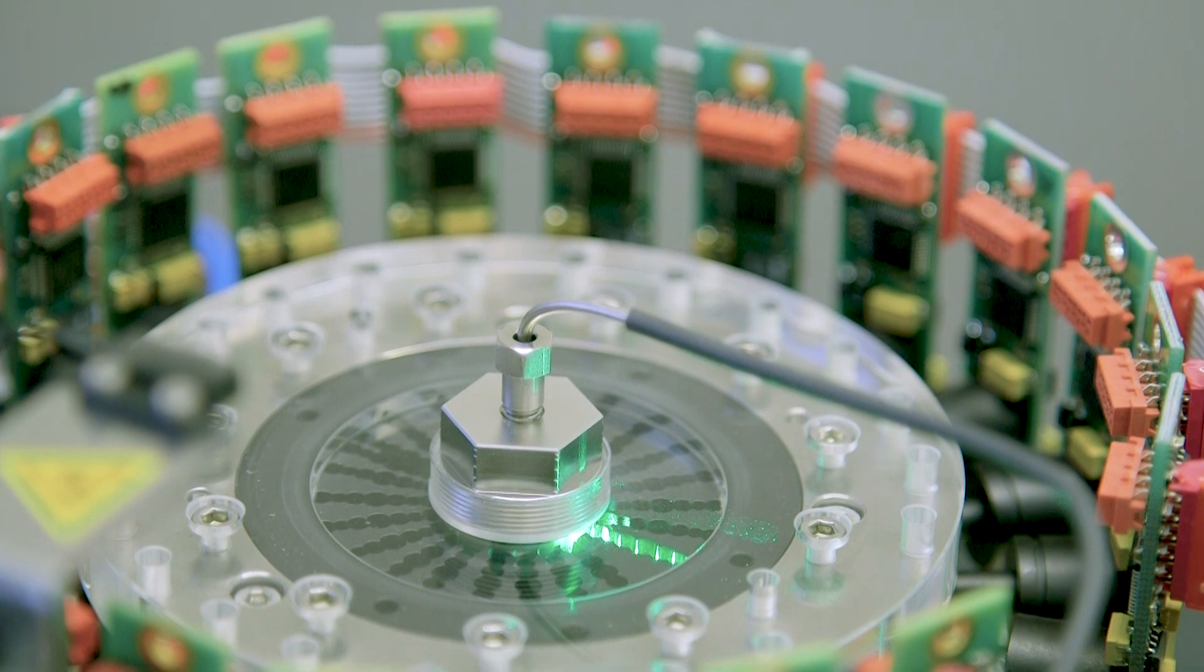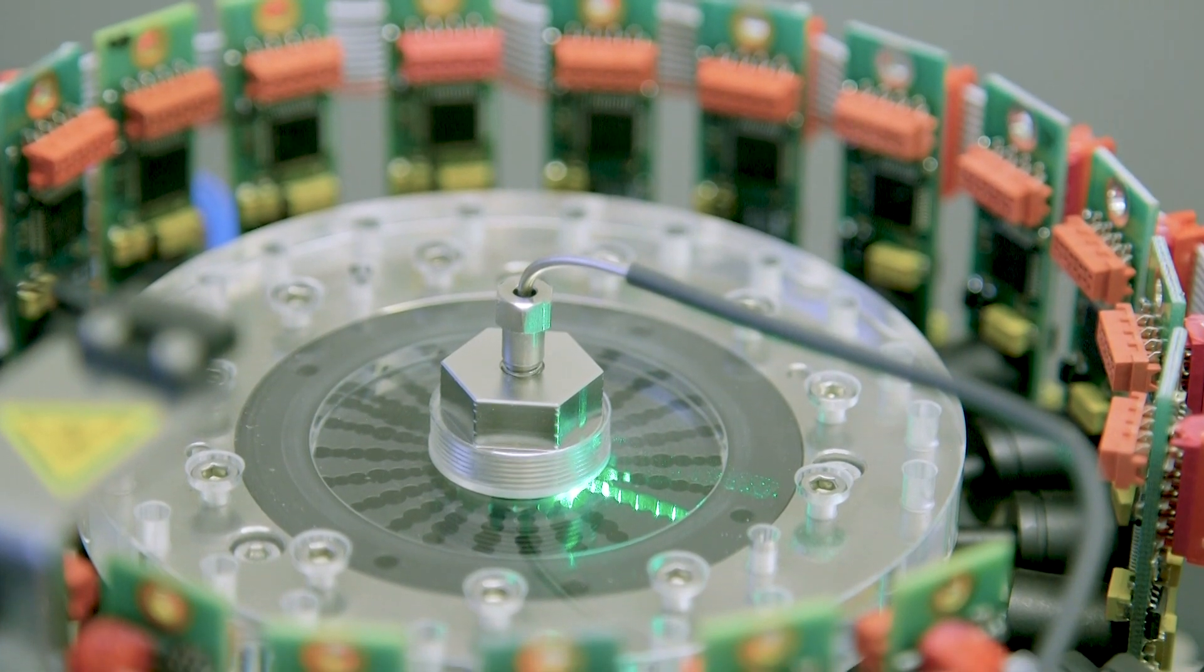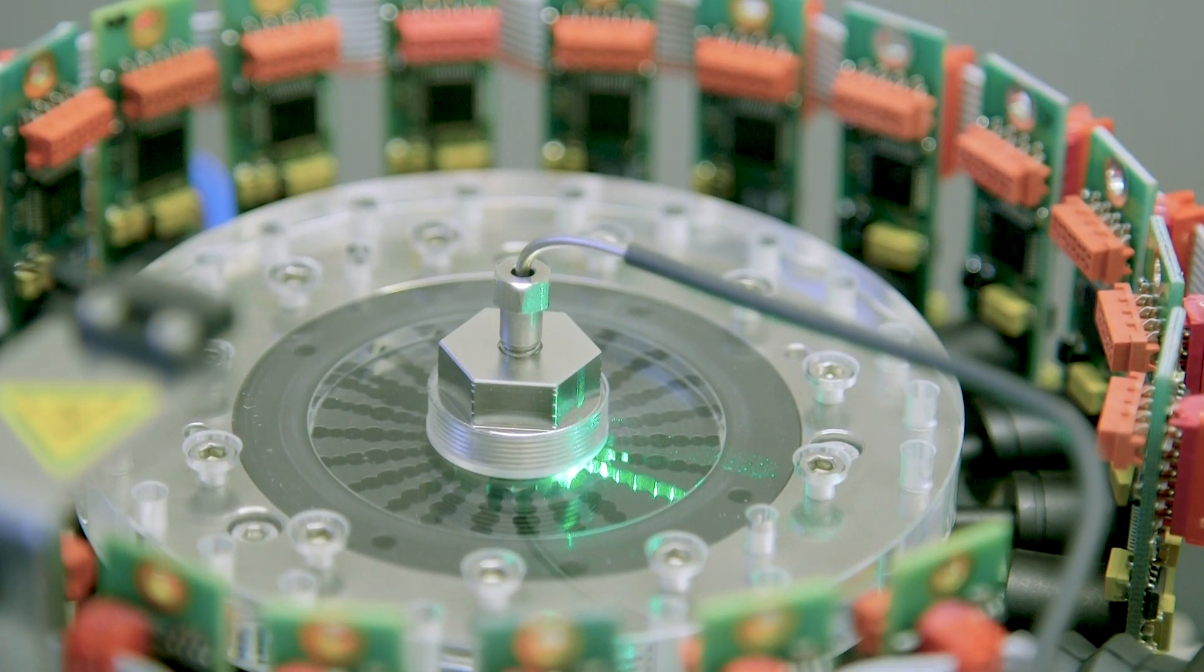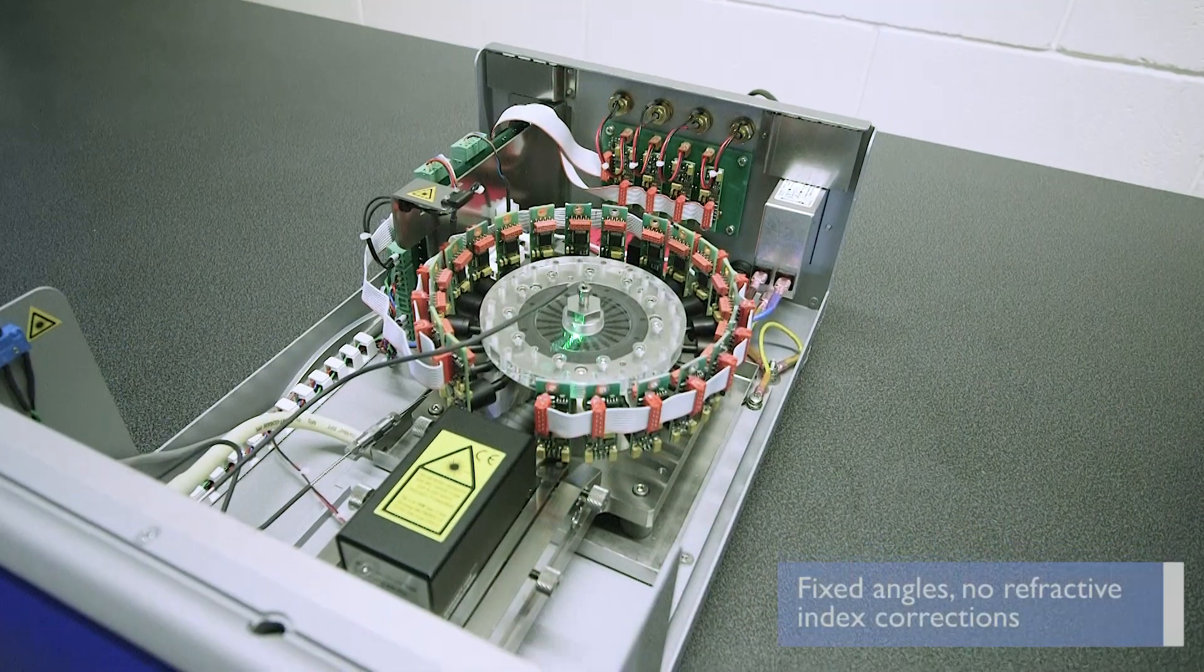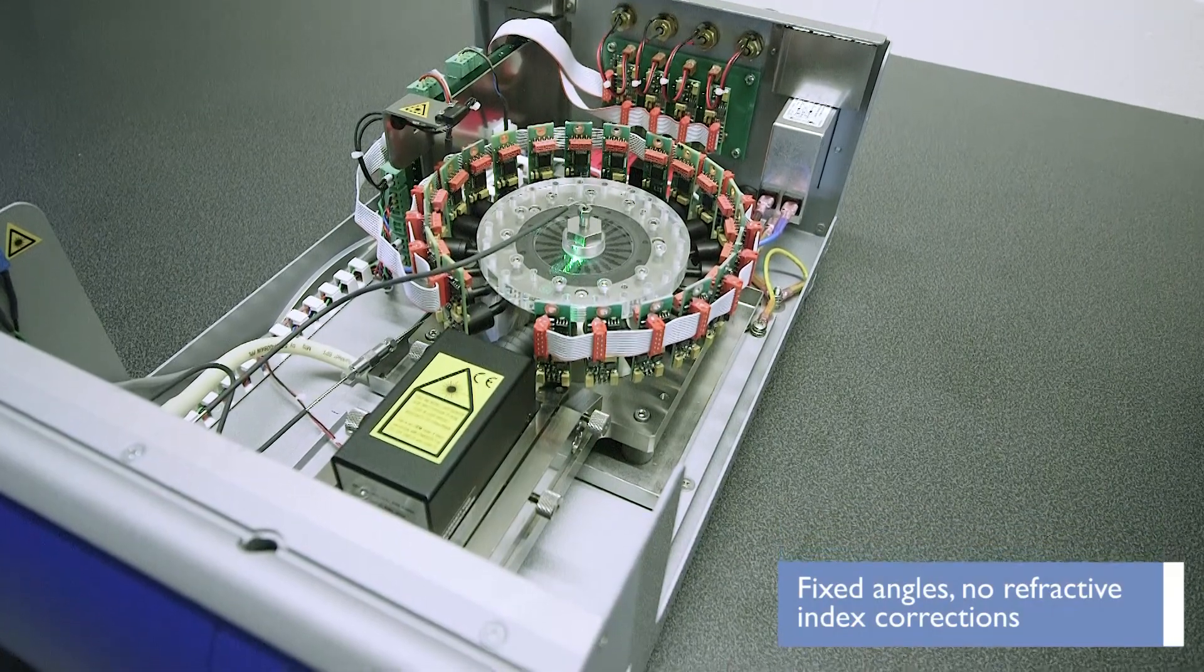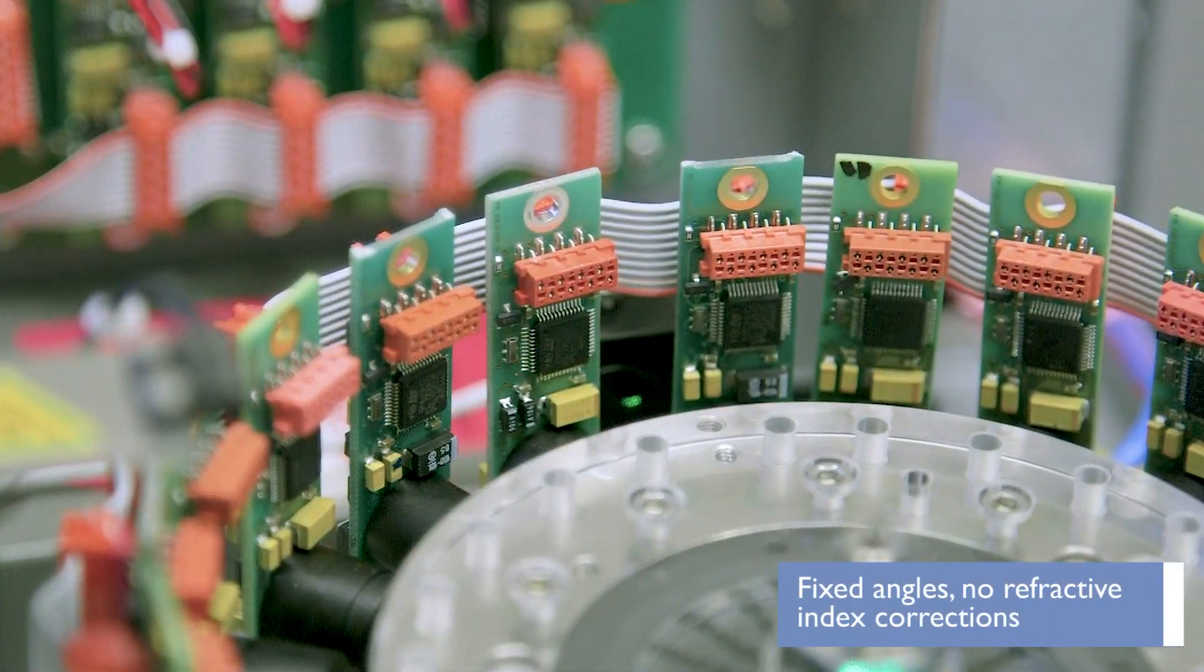Additionally, the innovative cell design of the Postnova MALS requires just one flow cell for all applications. There is no need for refractive index corrections, as all the detector angles are precisely defined and known, whatever eluent is used.